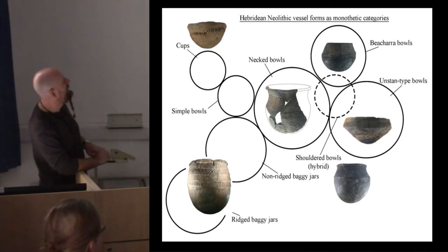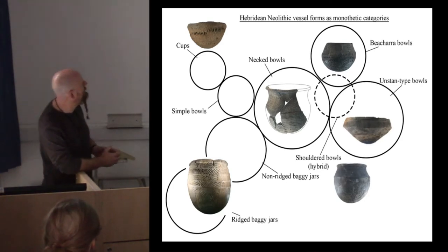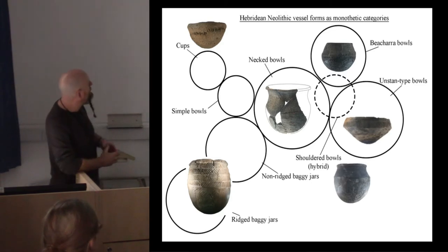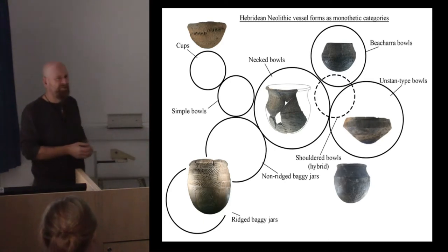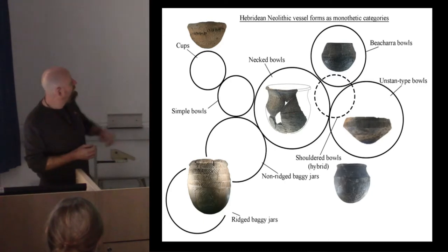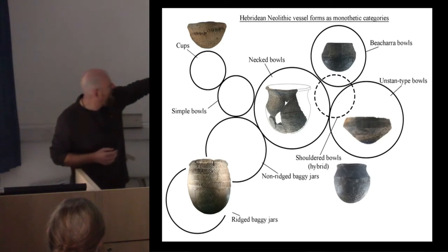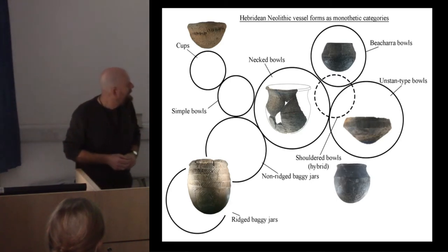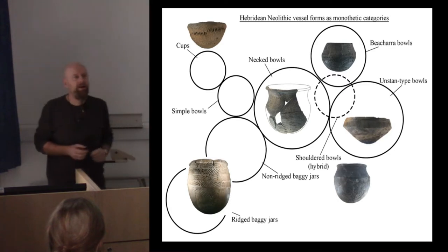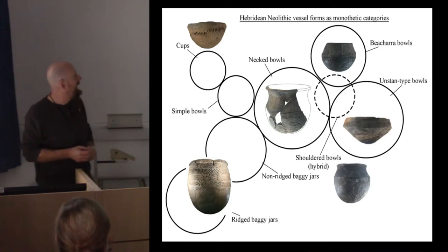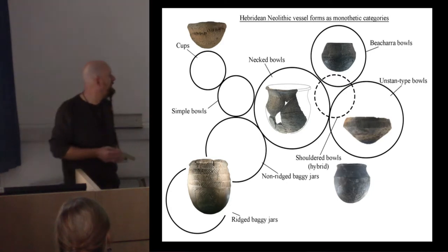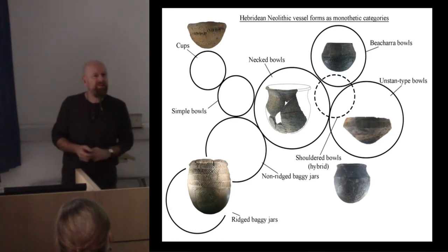We end up with these supposedly exclusive categories, but unfortunately the pots don't play ball. They don't really fit. We end up with vessels like the one in the bottom right-hand corner, which look a little bit like the Acara bowls at the top, but that vessel has decoration which is almost identical to that seen on the Unstan bowl, and indeed to quite a large number of these shouldered vessels found in the Hebrides. In the past, people might have called these hybrids — a phrase I really dislike.